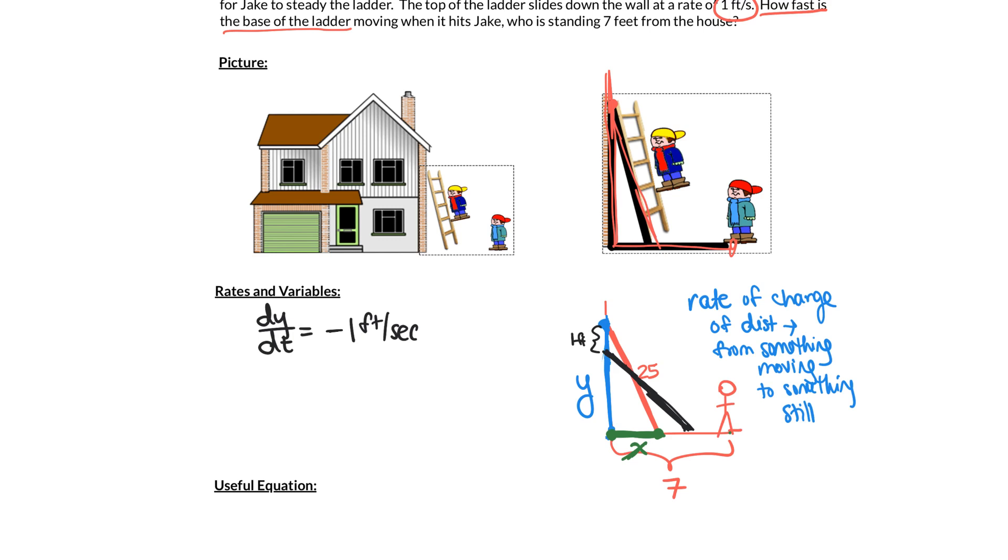So derivatives are supposed to be positive when the function is increasing and negative when the function is decreasing. But y here is decreasing as the ladder falls down. So dy/dt should actually be negative 1 foot per second.